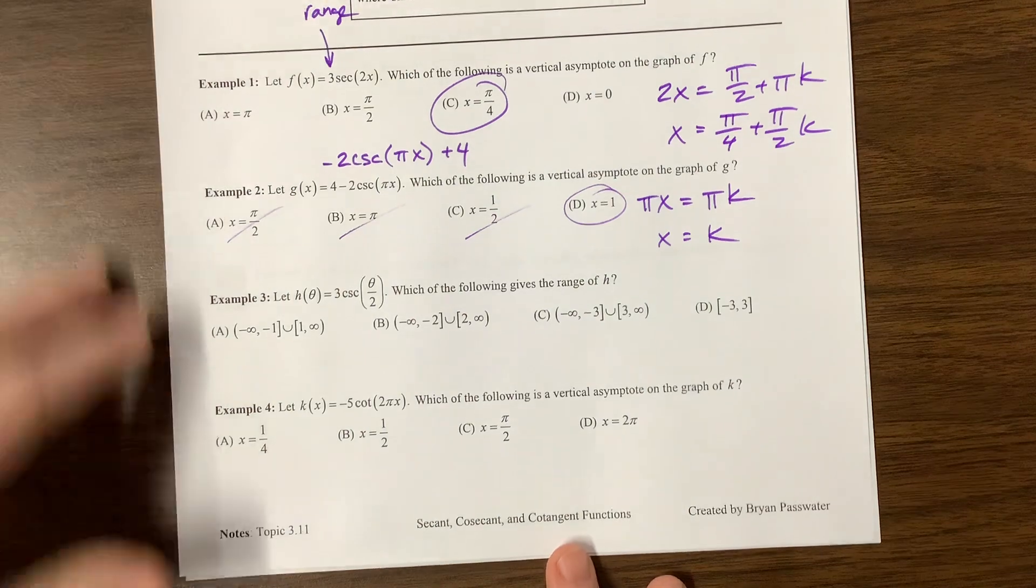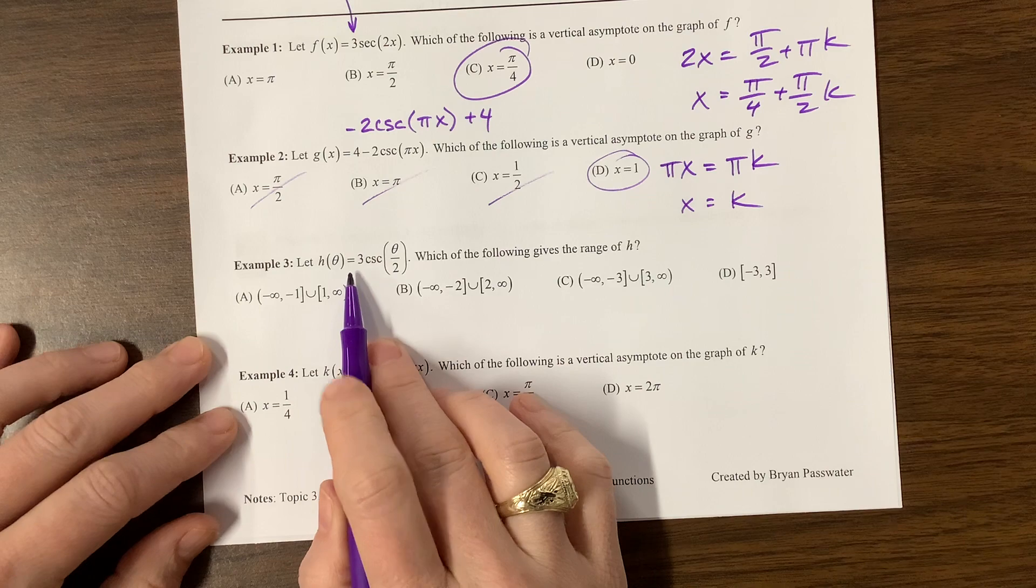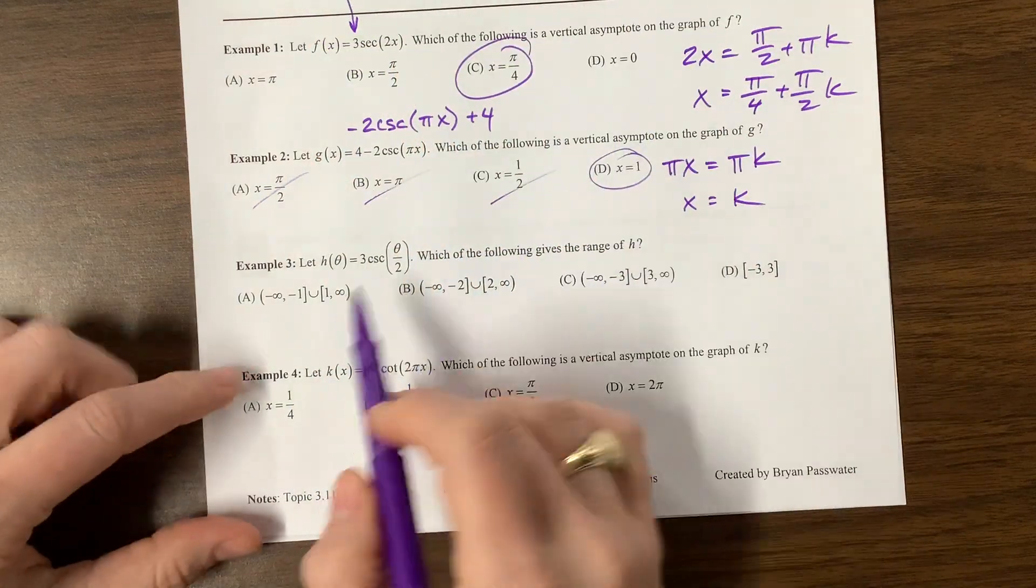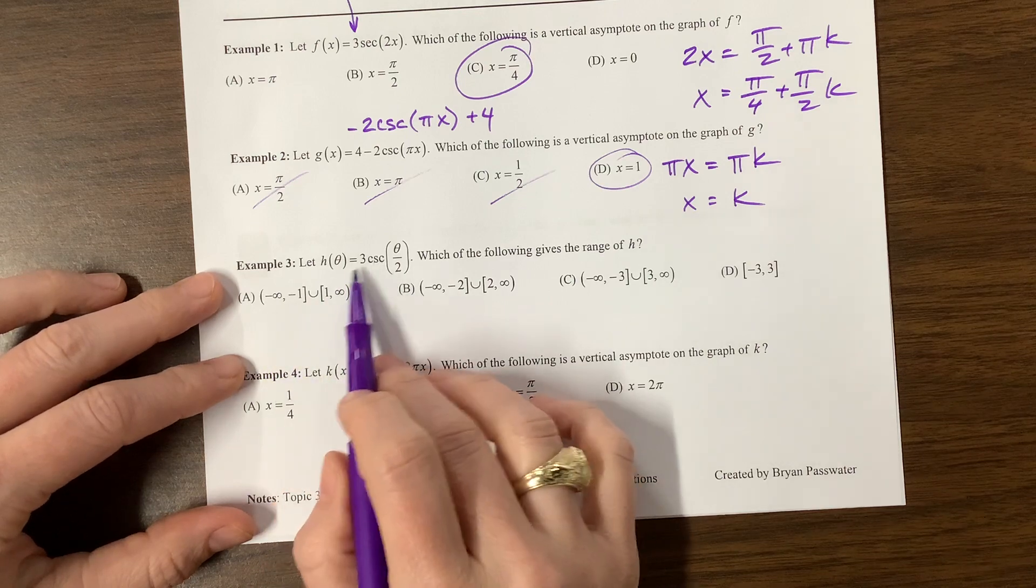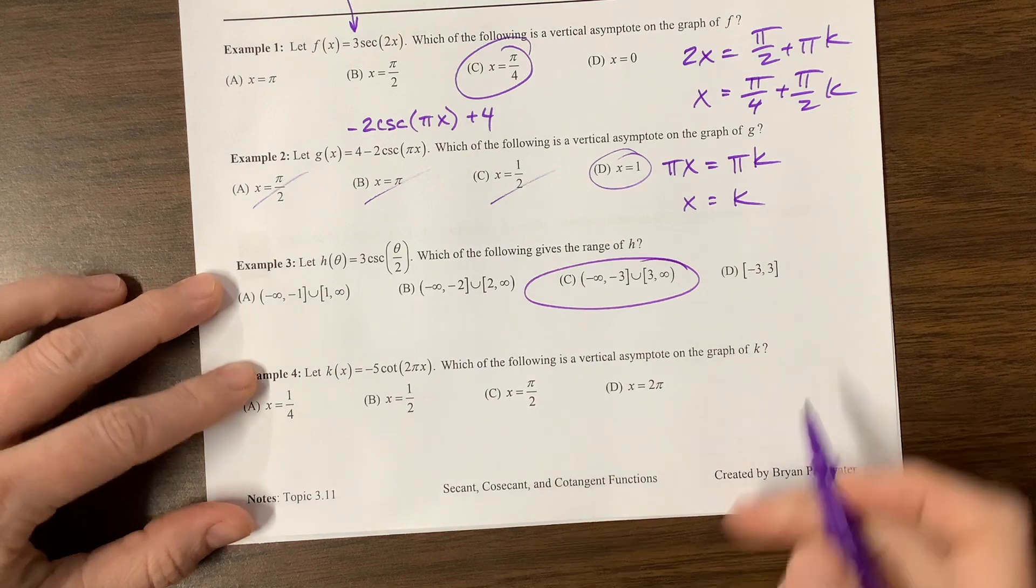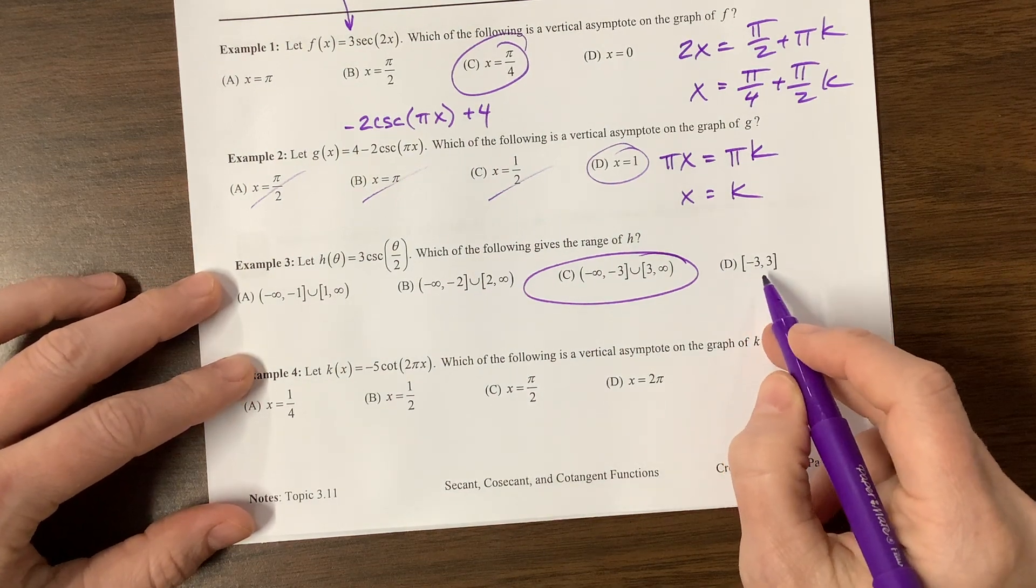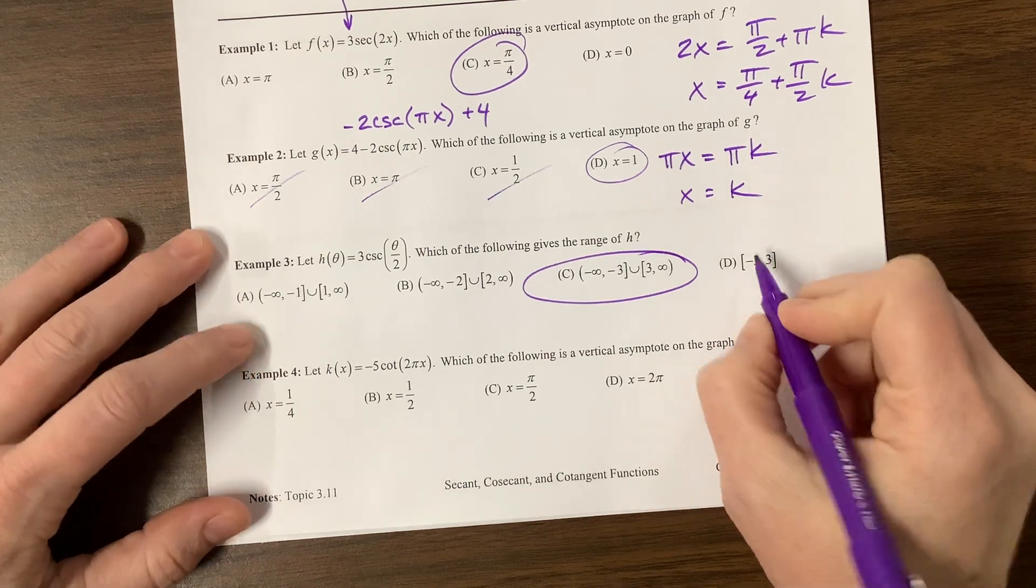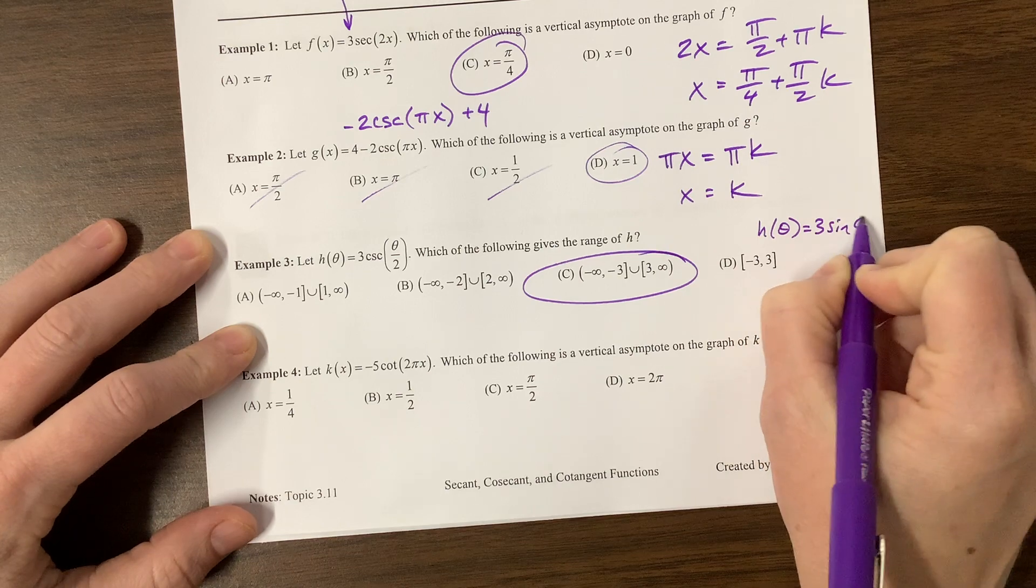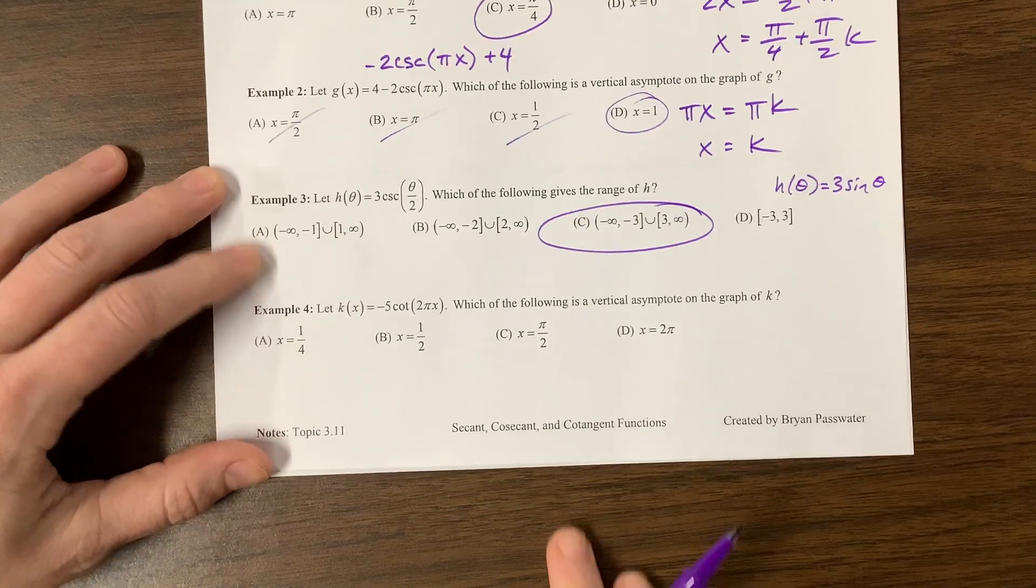Now we're looking at the range. This two right here has no impact on the range, but the three does. This is going to pull our gap apart. We're going to go from negative infinity to negative three and then three to infinity. This would have been, this is the gap, sort of not, but this is what would have happened had our equation been h of theta is equal to three sine theta. That's what the range would be.